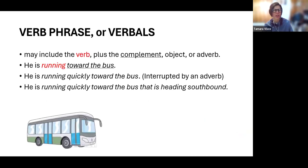The next kind of phrase is a verb phrase or verbals. These may include the verb plus the complement or the object. So, he is running towards the bus. Running is the verb. Toward the bus is the complement. He is running quickly towards the bus. Here, the phrase is interrupted by the adverb, quickly.